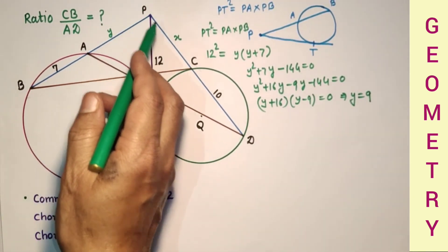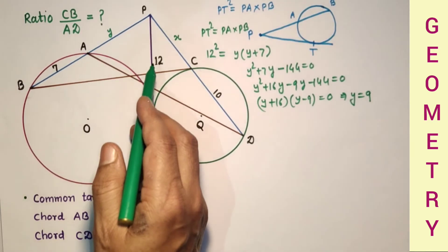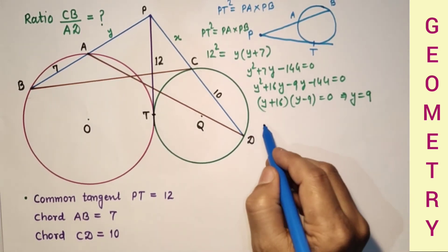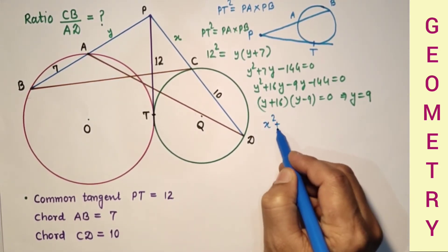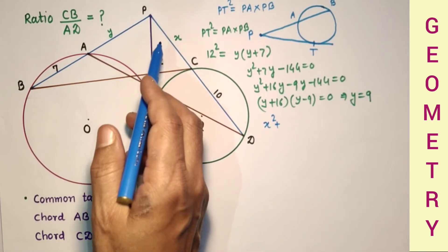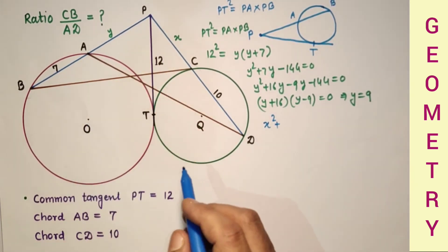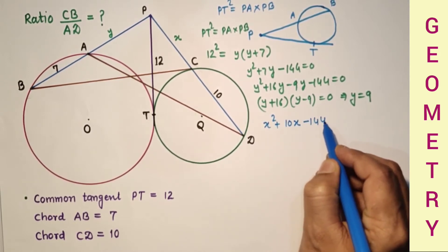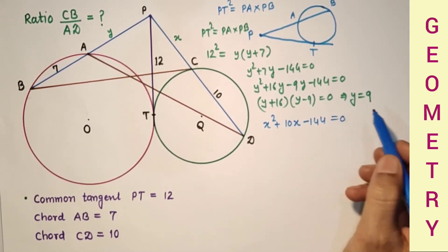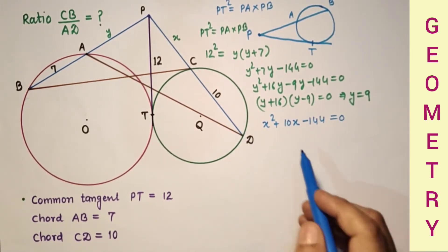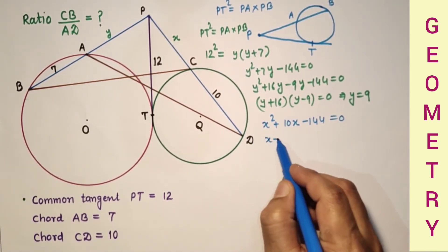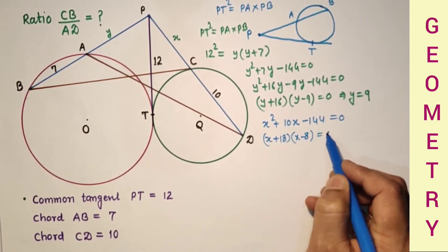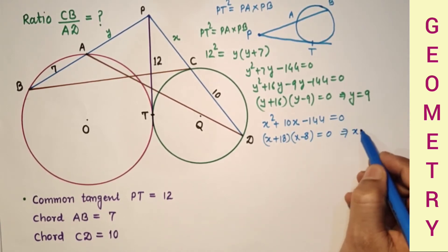That is X into X plus 10, which is equal to 144. So X square plus 10X minus 144 is equal to 0. If we factor, so we will get X plus 18 and X minus 8 which is equal to 0. So we will get X is equal to 8.